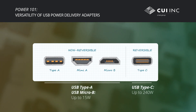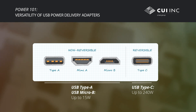The original USB 1.0 spec only allowed devices to draw up to 500mA at 5V. This increased over time, but with USB Type-C and Power Delivery 3.1, USB can now provide up to 240W.